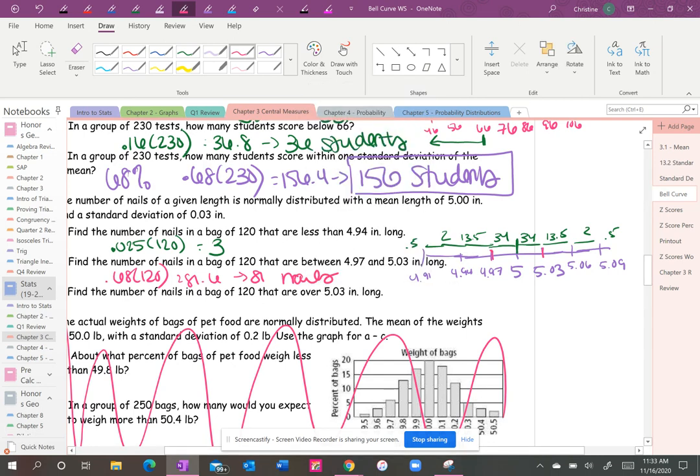And then the number that are over 5.03, so that's here. 13.5 plus 2 plus 0.5 is 16. So 16 percent of 120 is 19.2, which goes to 19.